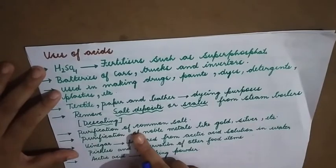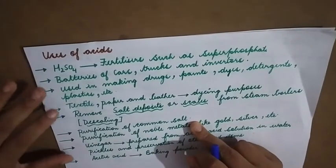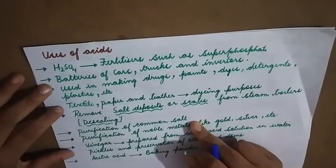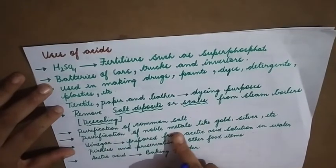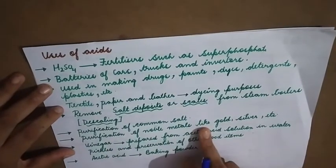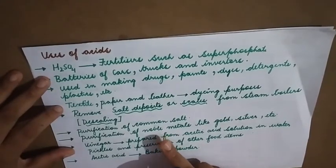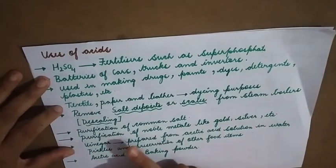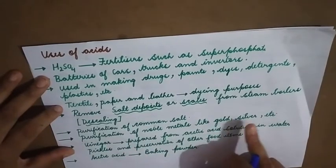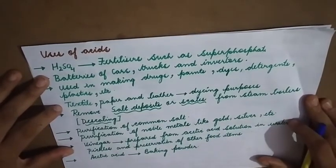Acid is used in the purification of common salt and even in the purification of noble metals. Noble metals are metals that are not reactive. For the purification of gold and silver, acid is used.